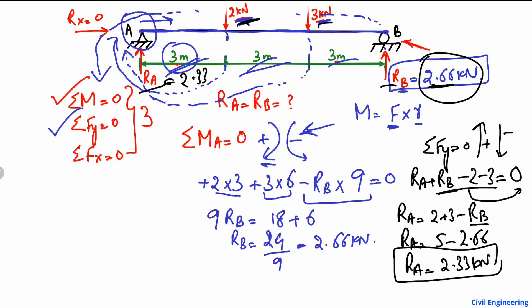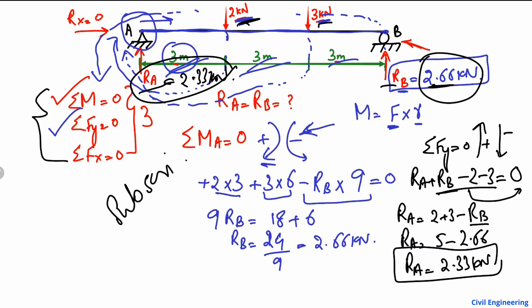So RA equals 2.33 kilonewtons. I hope you now understand how to find support reactions. Remember to use the three equilibrium equations: summation of moments, summation of vertical forces, and summation of horizontal forces. Don't forget to subscribe for more civil engineering videos. Thank you for watching.